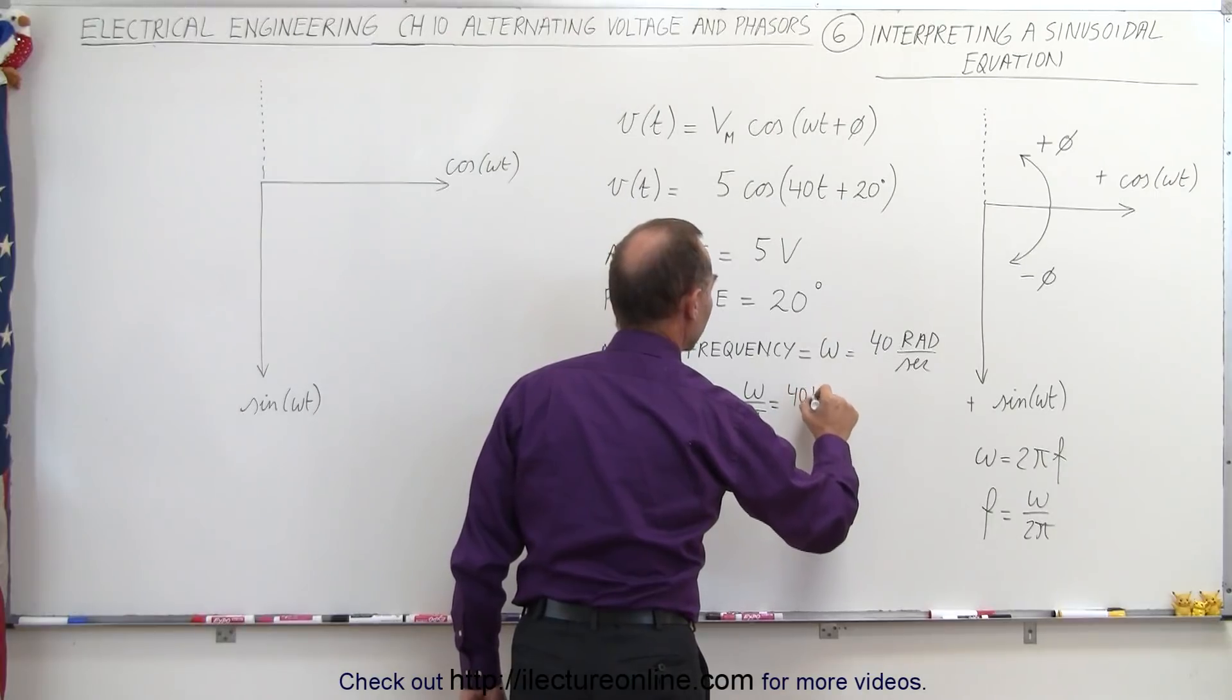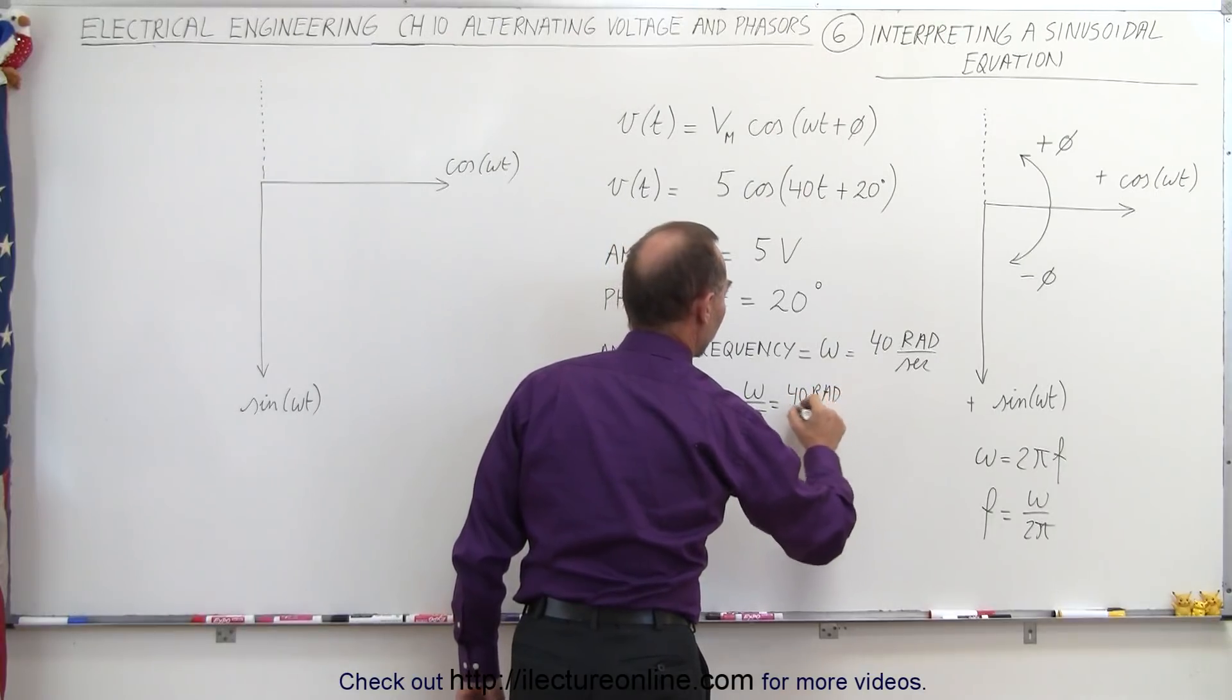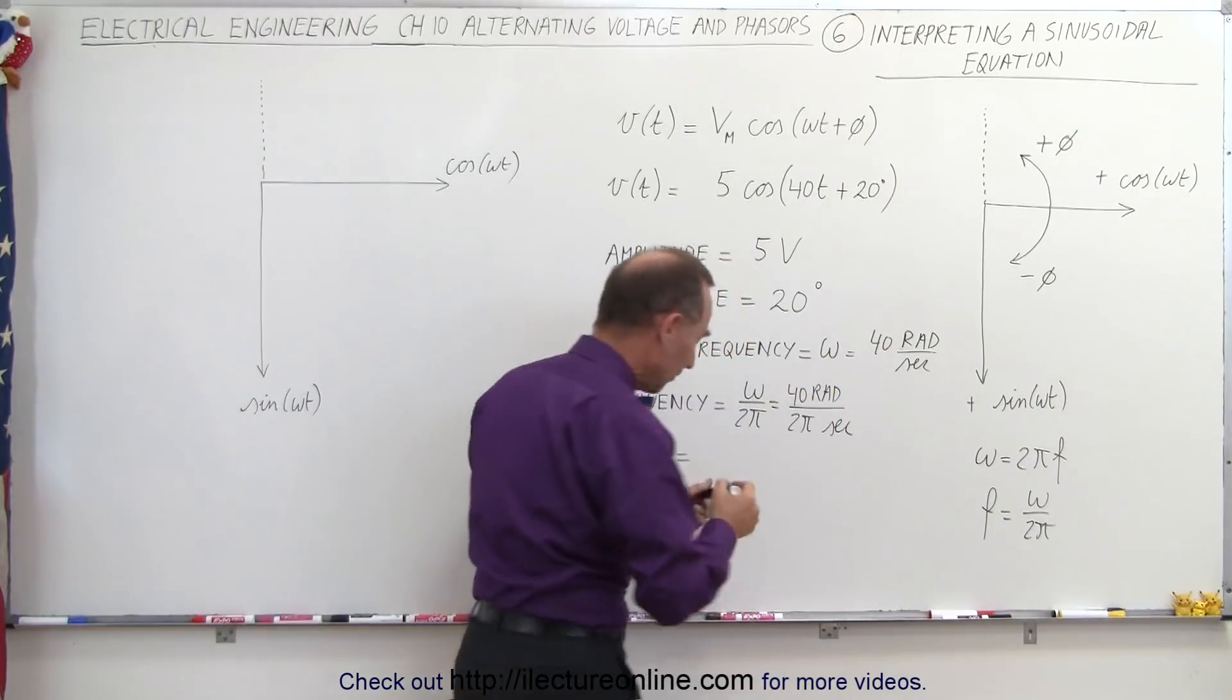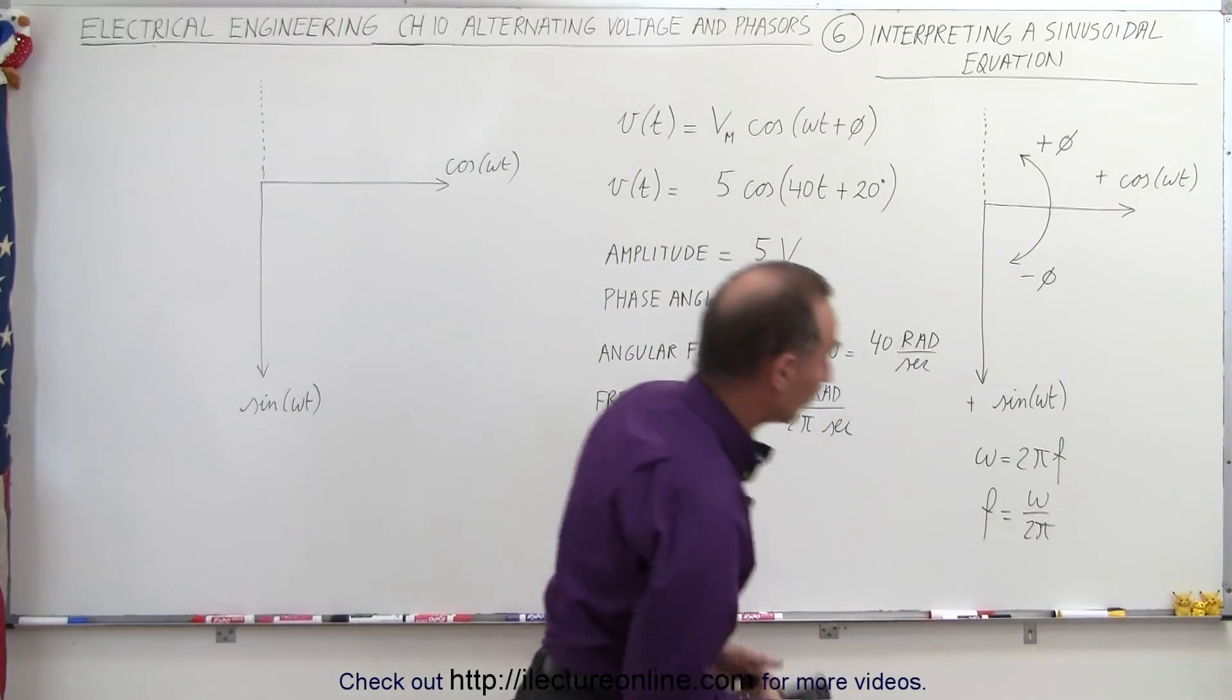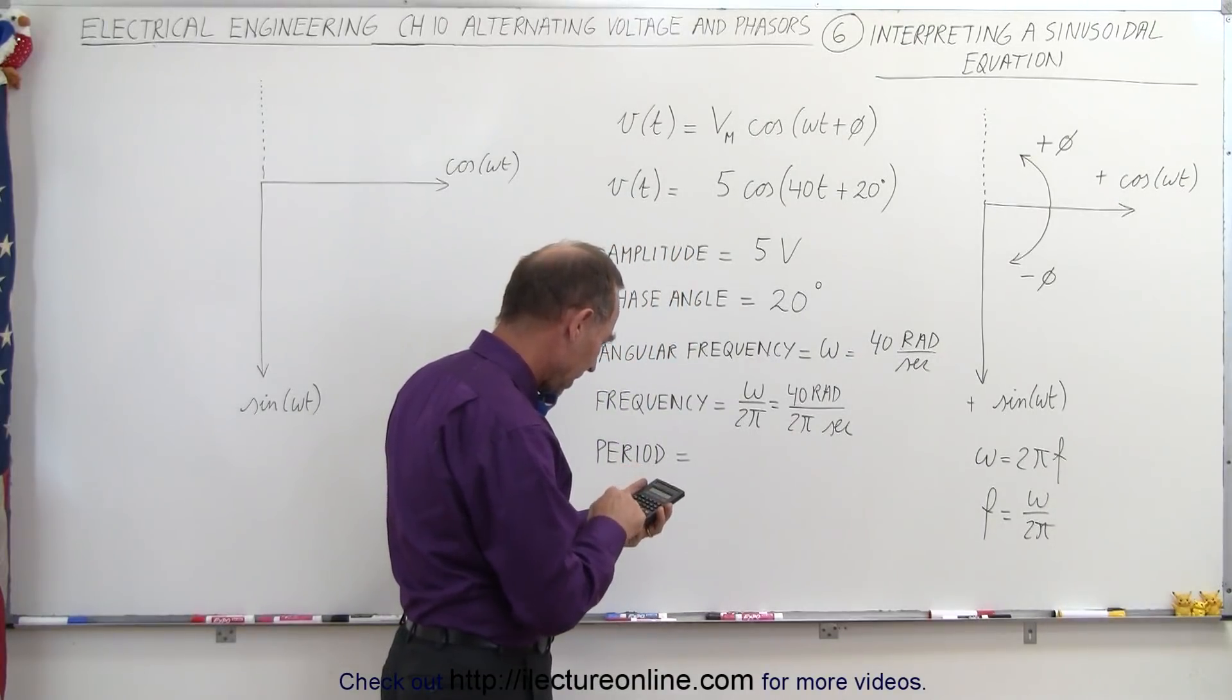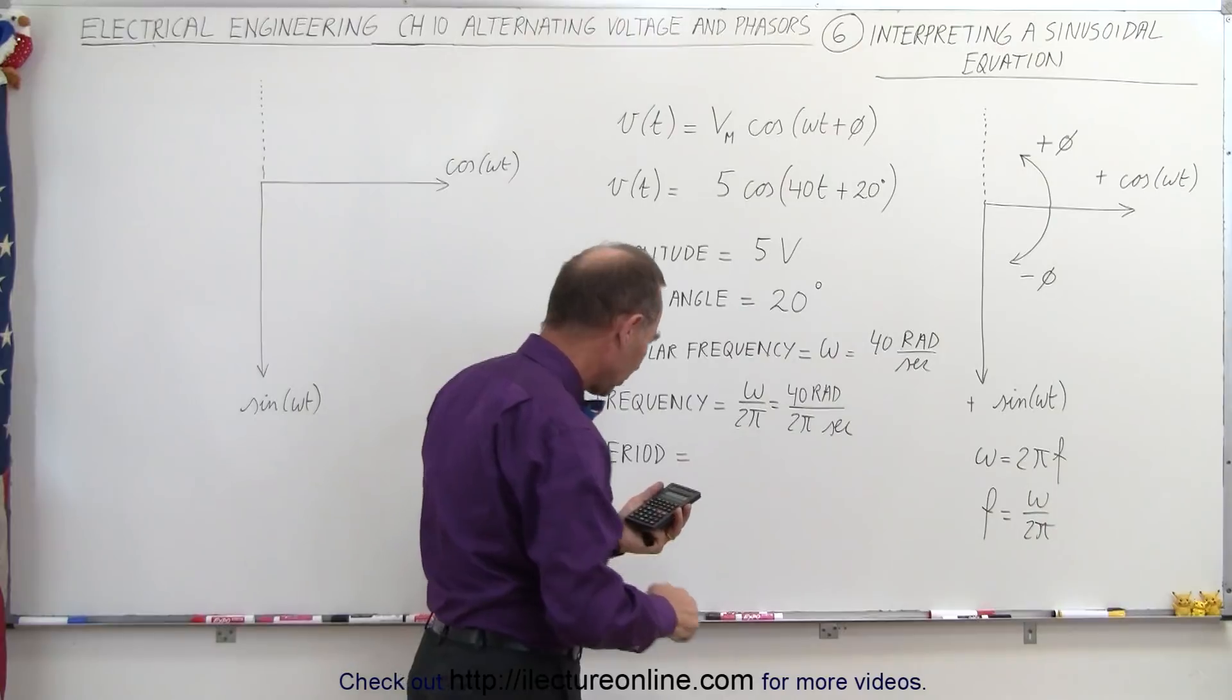That would be 20 divided by pi, and the units now become cycles per second. So that would be 20 divided by pi equals 6.37, 6.37 cycles per second.